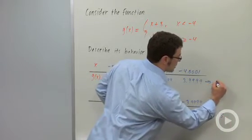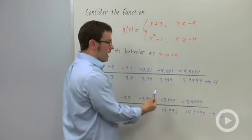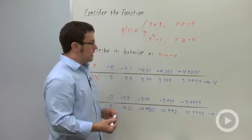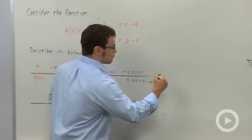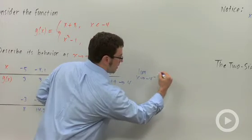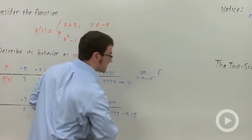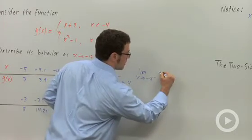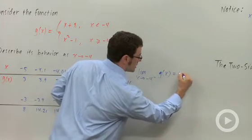Okay, so we're approaching 4 from the left and approaching 15 from the right. So here's what we say. We say the limit as x approaches negative 4 from the left of g of x is 4.